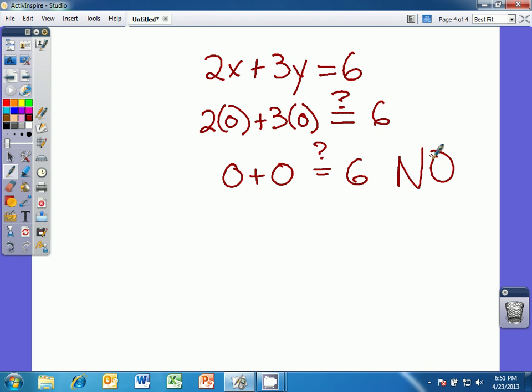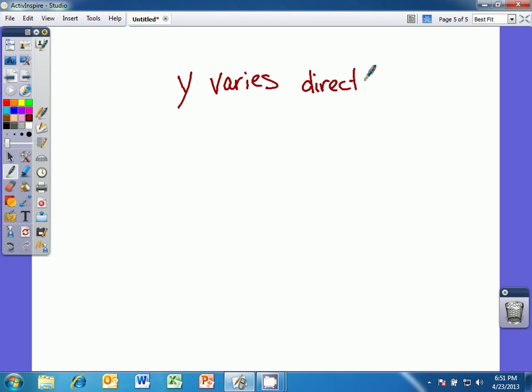We may be told that y varies directly with x. So we're told that we have a direct variation function and we may be told what the value of y and x is. Y is 35, for example, and x is 5. Well, if we're told y varies directly, that means we have a direct variation function.